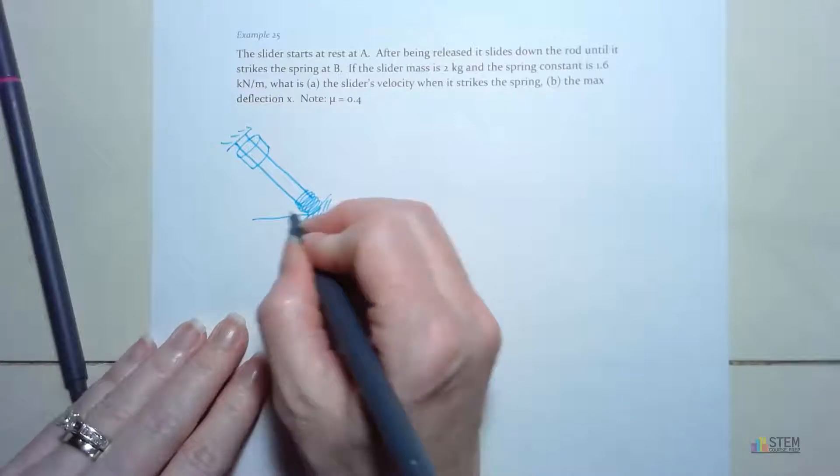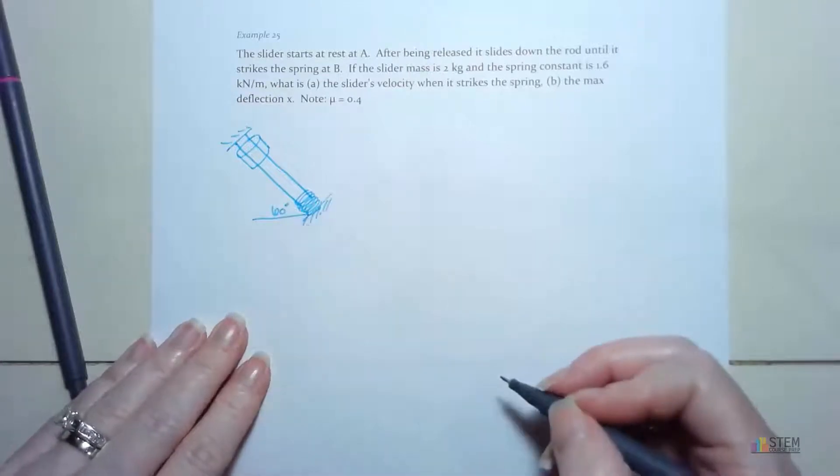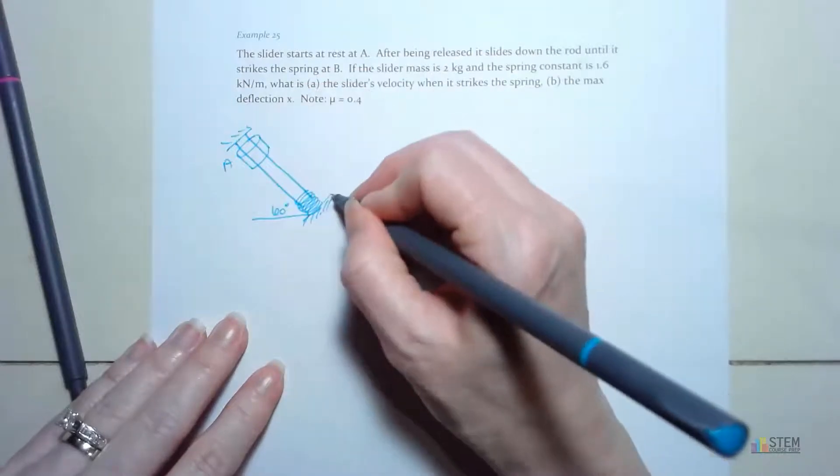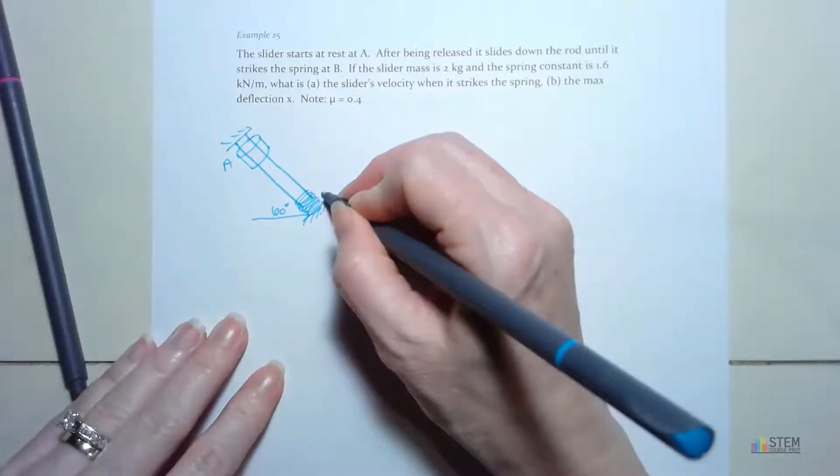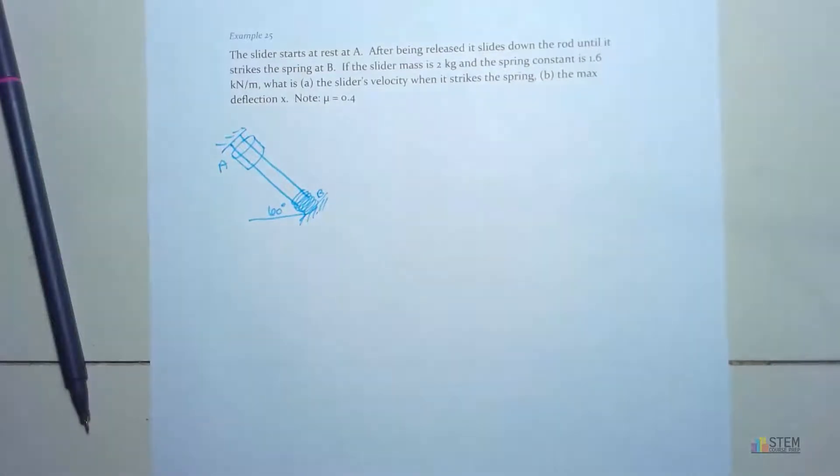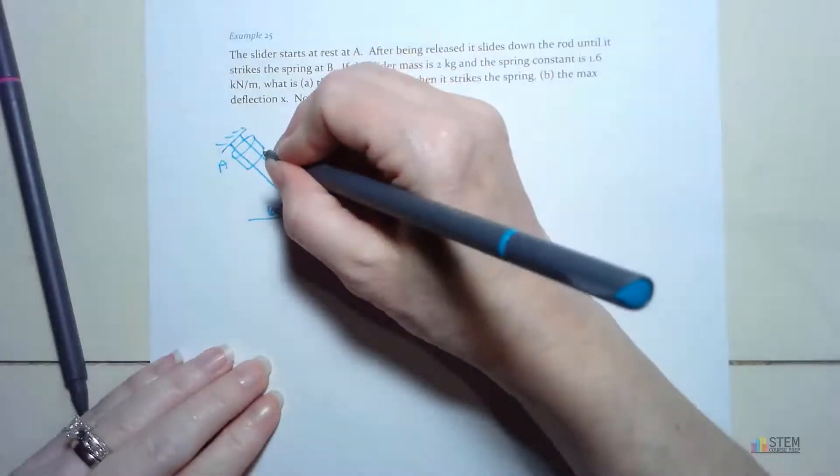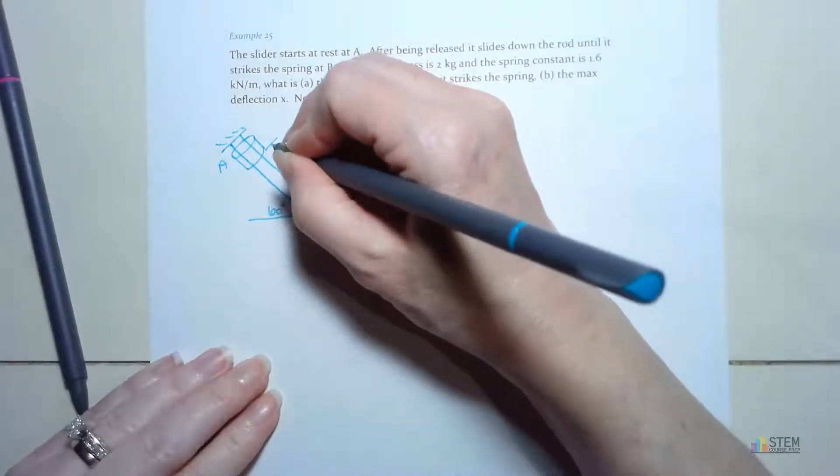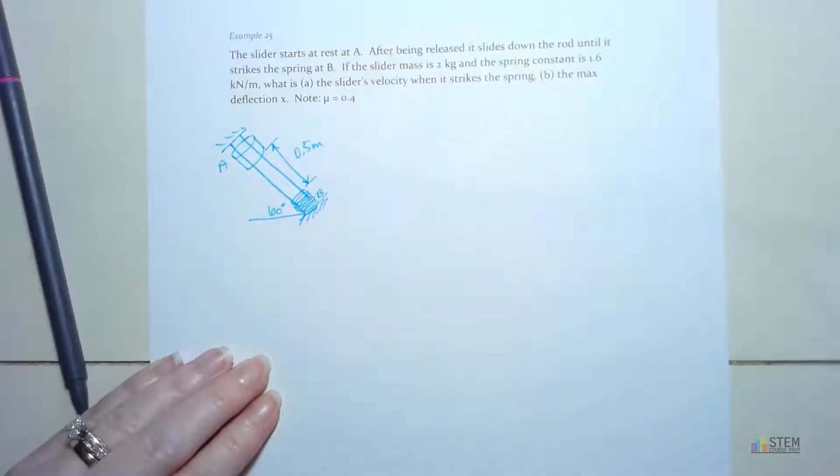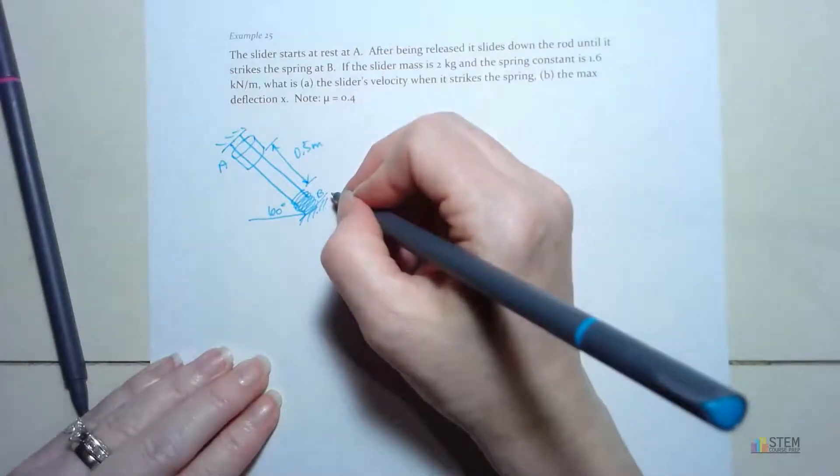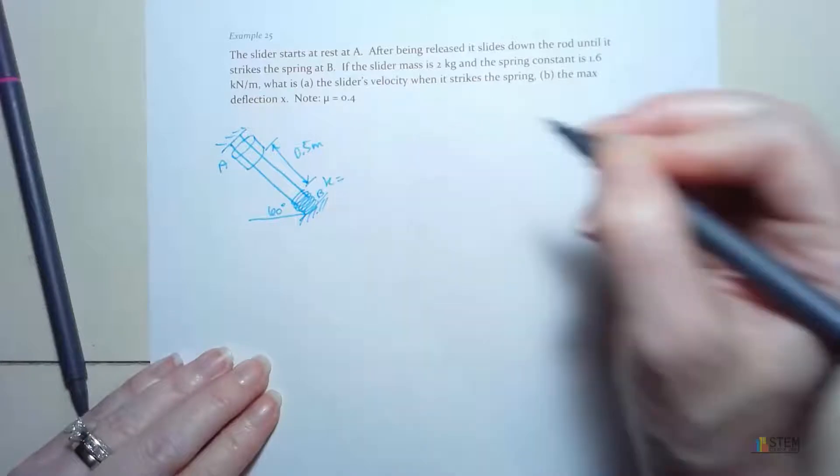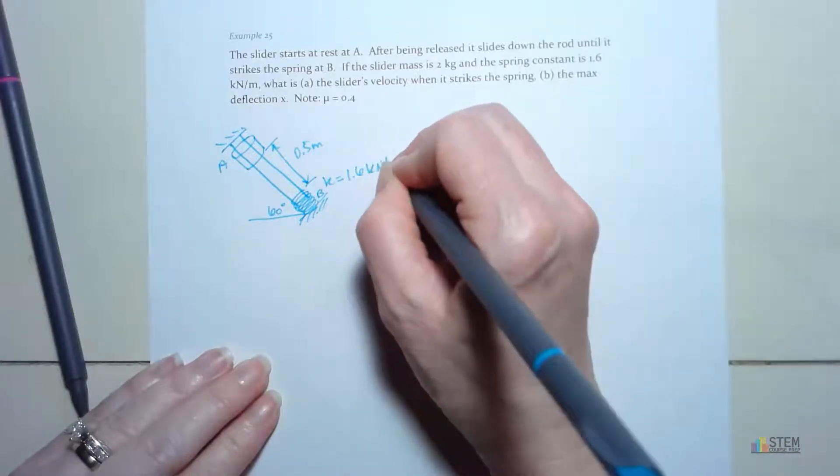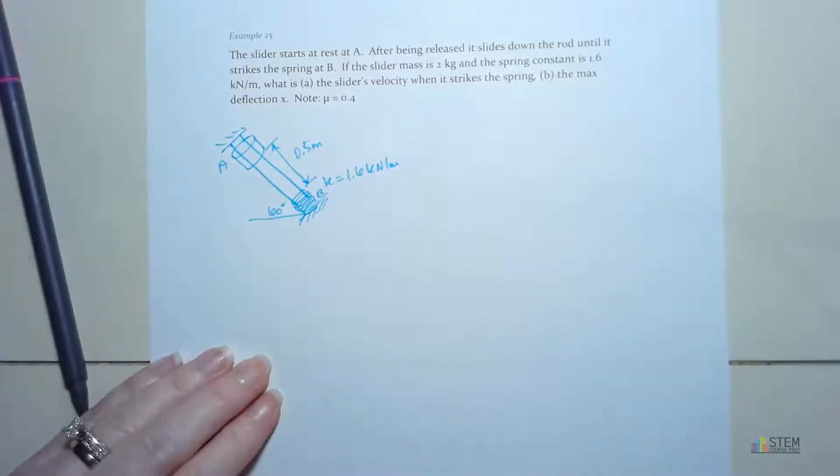This is at a 60 degree angle, and we start up here at A and we end up at B, which is down here. The distance from the bottom of this slider to the top of this spring is going to be 0.5 meters. And my spring constant, which is up here, is 1.6 kilonewtons per meter.